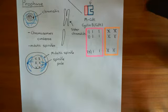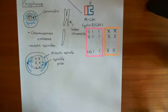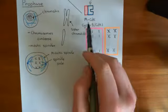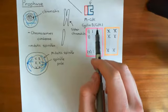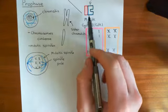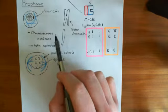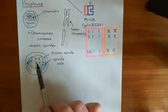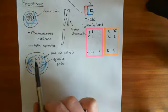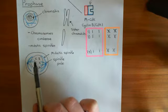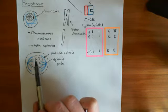Welcome back to this next video in which we're discussing mitosis within the cell cycle. So we've discussed the prophase of mitosis, in which the MCDK, or this cyclin B-CDK1 complex, causes the chromatin to condense into the chromosomes, and it appears as these X sort of shapes, because you have two sister chromatids joined together.